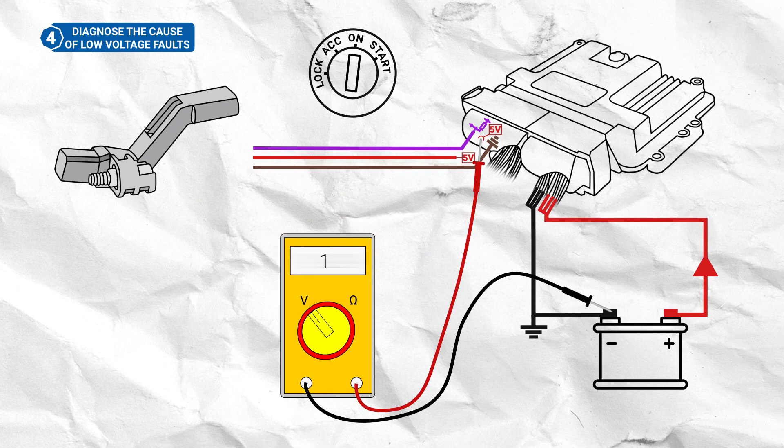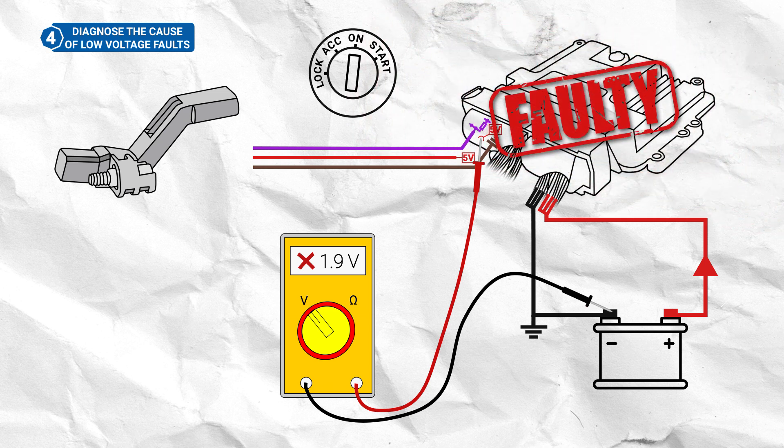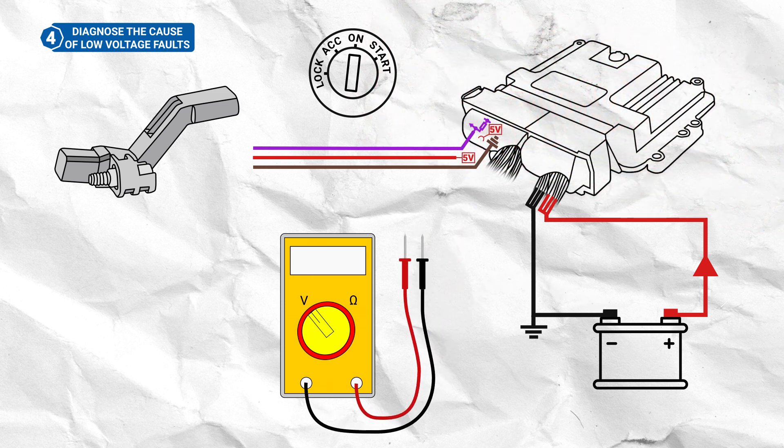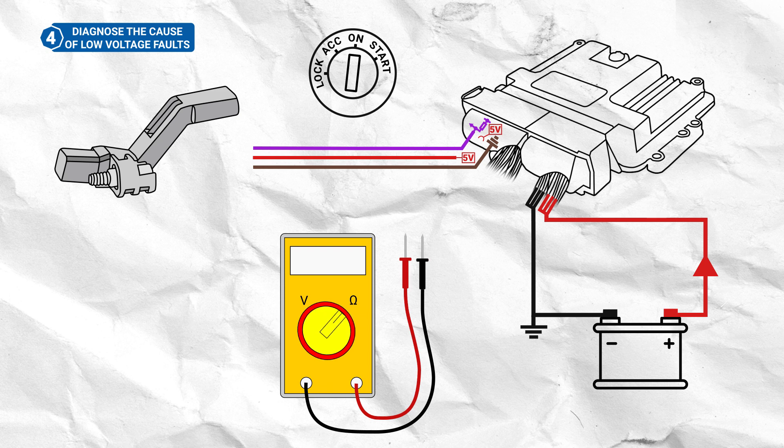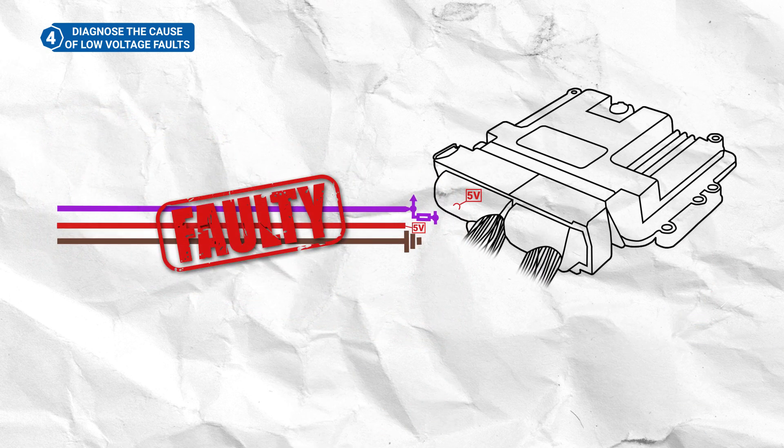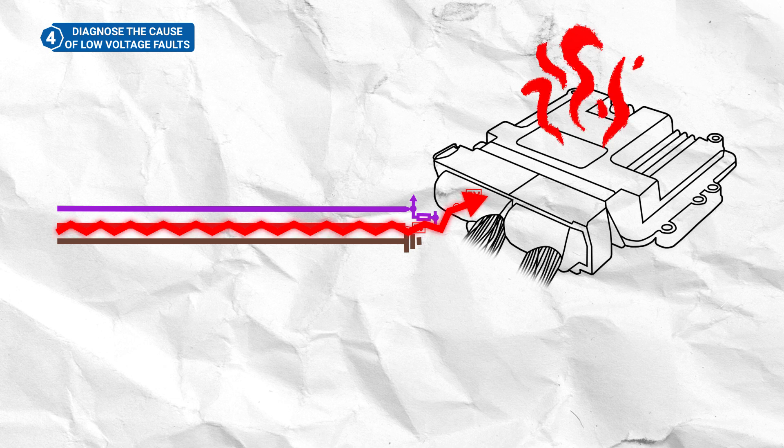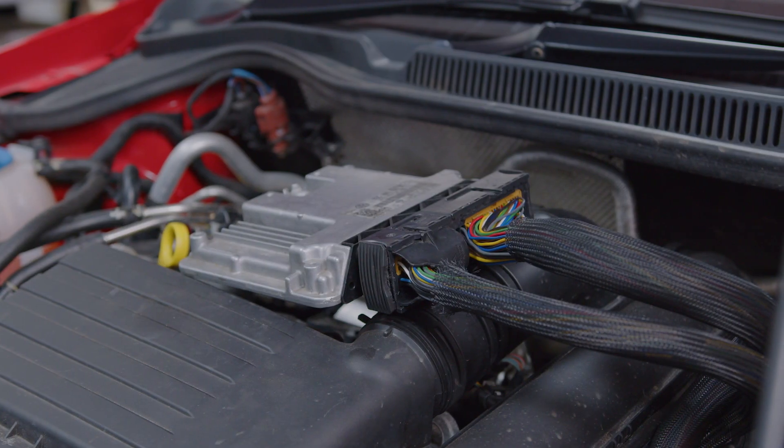But if the reading was still incorrect, then there is a fault within the ECU, which will need to be remanufactured. To confirm the bad reading is only within the ECU, complete a continuity test between the affected terminal at the sensor connector and battery negative. If any continuity is displayed here, then there is a fault within the wiring loom, which has in turn caused damage to the ECU. If this is the case, then both the loom and ECU will need repairing.